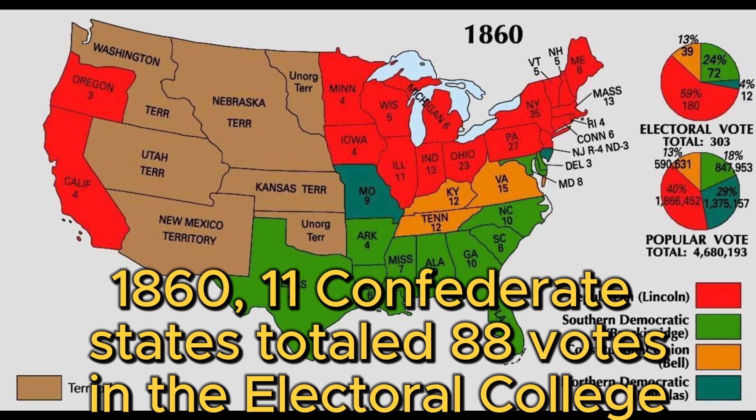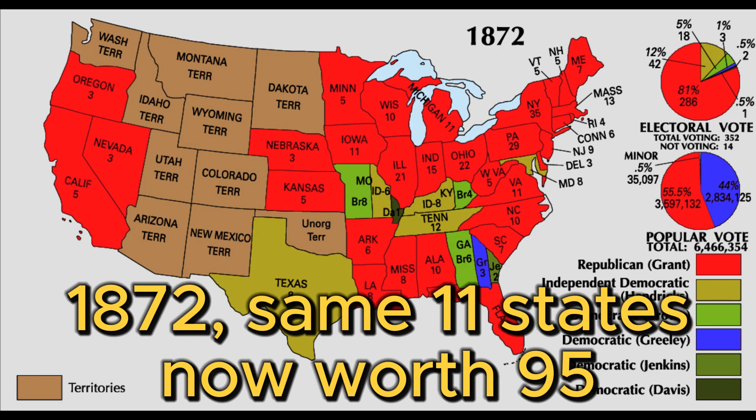For example, in 1860, the 11 former Confederate states totaled 88 votes in the Electoral College, which is the sum of the states' representatives and senators. In 1872, those 11 states now totaled 95.